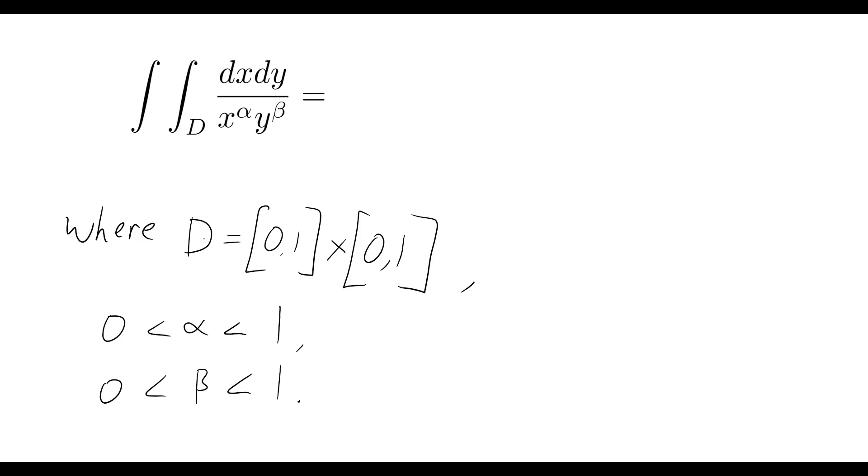So we have our region D defined by the one by one square, or if we were to try and imagine that, it would just be a quick one by one square. We also have that alpha is bound between zero and one, likewise with beta.